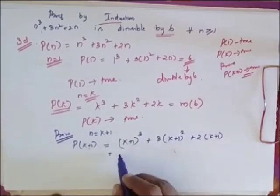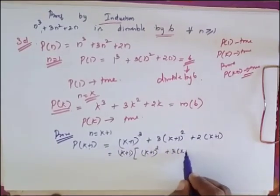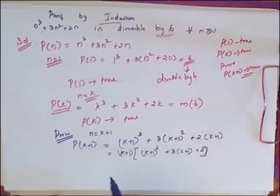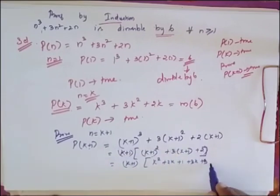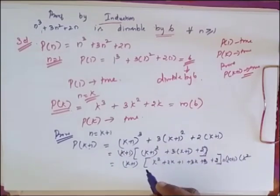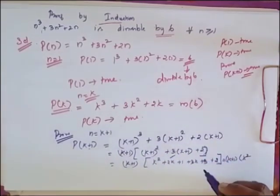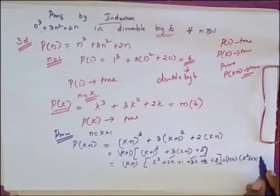I am taking (K+1) commonly outside. So I will have (K+1)[(K+1)² + 3(K+1) + 2]. When I simplify this, I get (K+1)[K² + 2K + 1 + 3K + 3 + 2], which gives (K+1)[K² + 5K + 6].